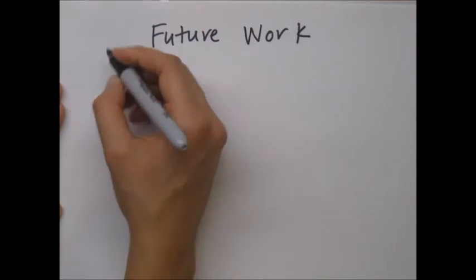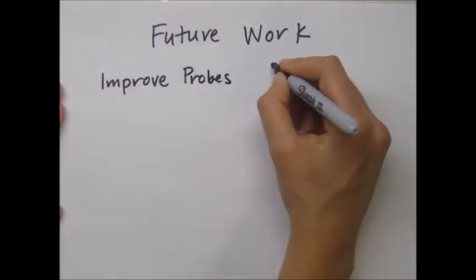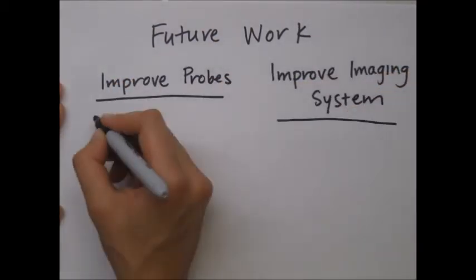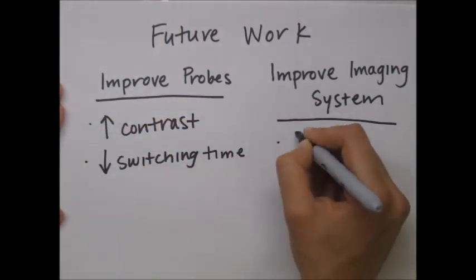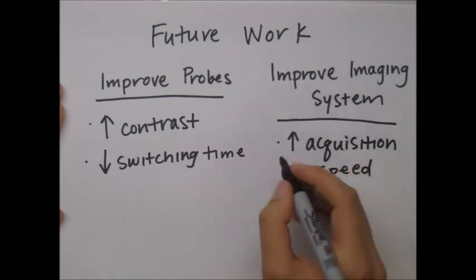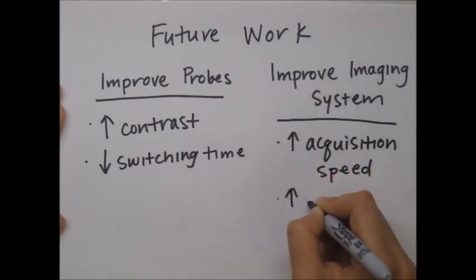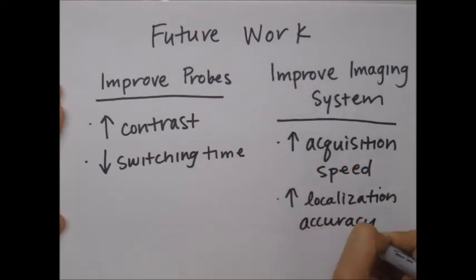Despite these limitations, STORM has some amazing capabilities and can be used with multiple color probes for 3D imaging and to image live cells. Future work to improve STORM will likely focus on improving the brightness and contrast of fluorescent probes while improving image acquisition rates and image processing capabilities.